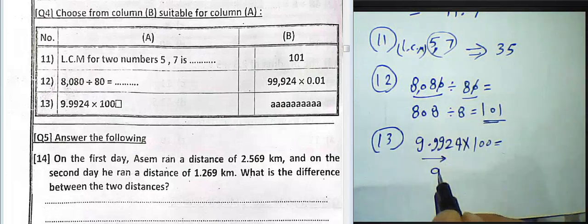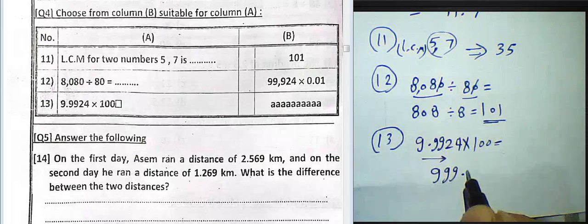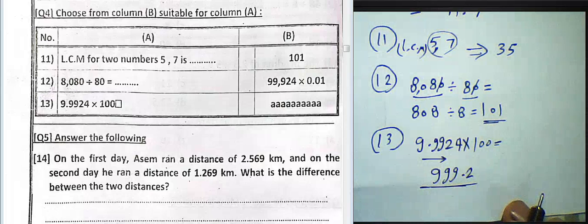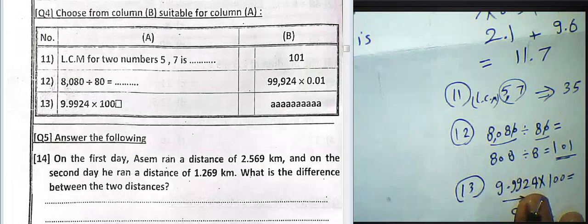Question 13: 9.9924 multiplied by 100. We move the decimal point two places to the right. The result is 999.24.